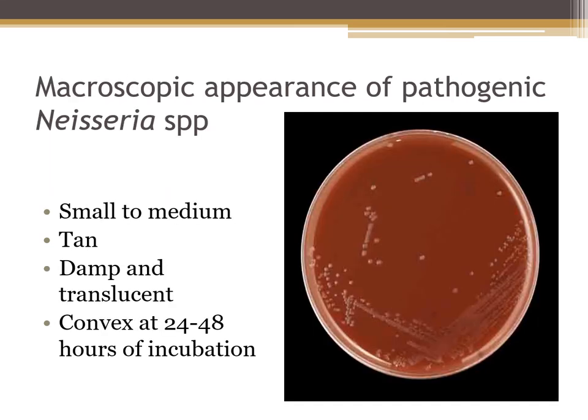Macroscopically, the Neisseria species can be small to medium in size — usually more medium. On blood agar, they're gamma hemolytic, but we should not be evaluating hemolysis on chocolate agar. On chocolate agar, they're going to be tannish to slightly greenish, damp and translucent, and convex at 24 to 48 hours of incubation. These Neisseria species are considered slow growers, kind of like Micrococcus luteus — very small at 24 hours and larger at 48 hours.